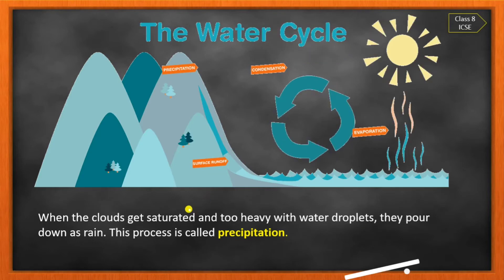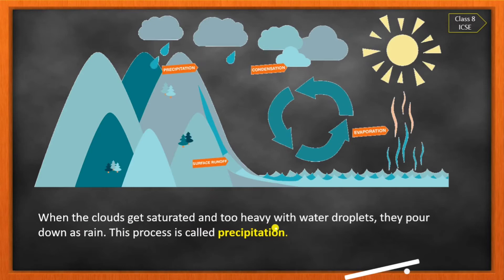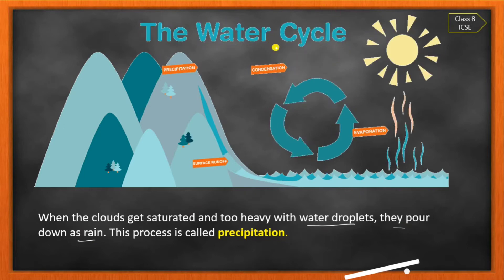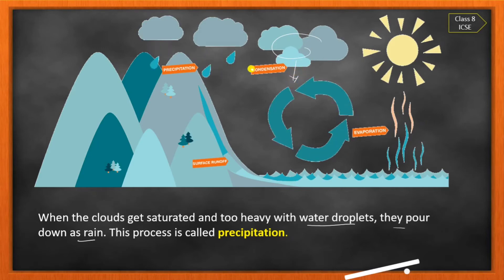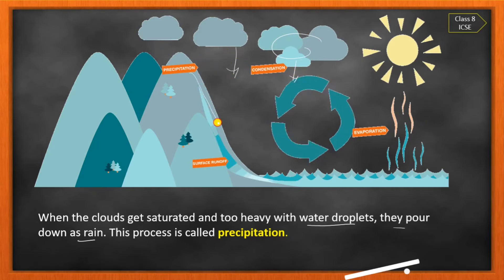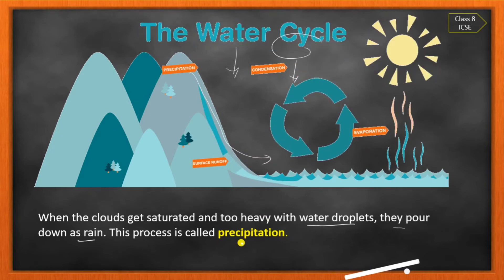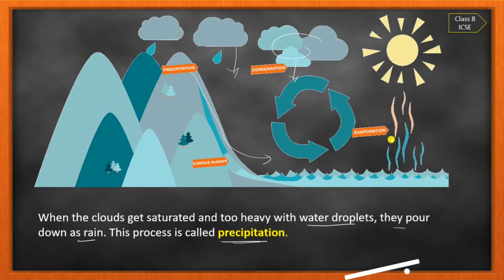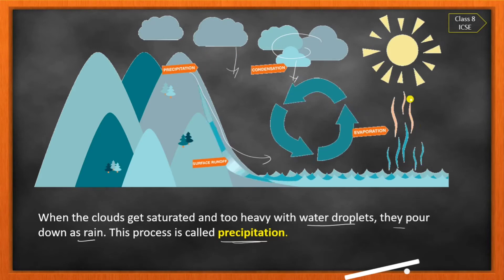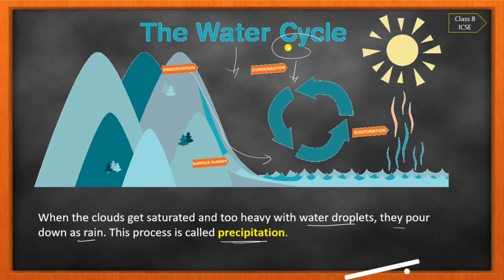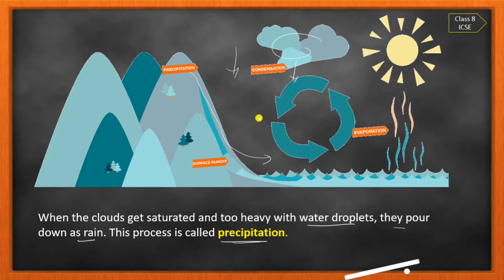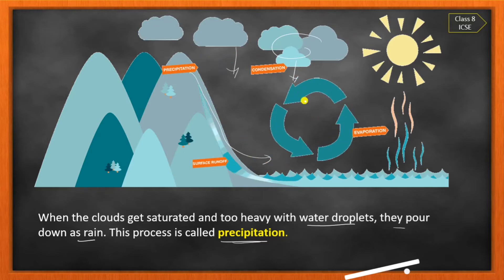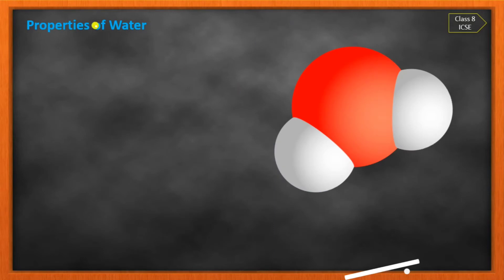This process is called condensation — water vapours cool down and condense to form clouds. When the clouds get saturated and too heavy, water droplets pour down as rain. This water comes back down to the ground and accumulates on the surface.